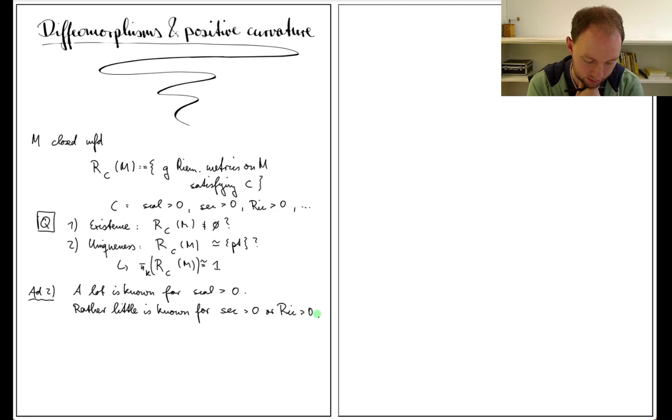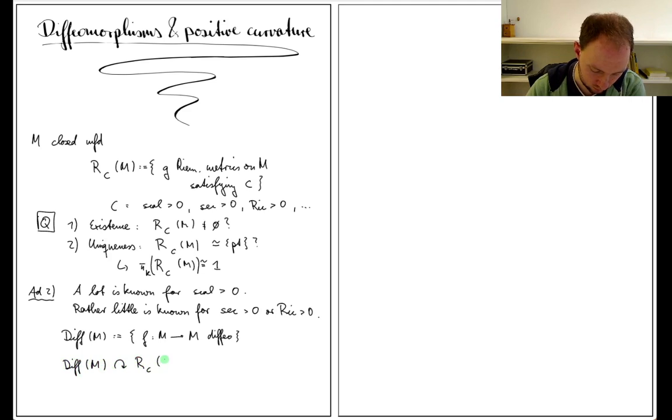What is one way to obtain possibly interesting elements in these homotopy groups? It's given by considering the action of the diffeomorphism group. Let Dif(M) be the topological group of self-diffeomorphisms of M. This acts on Rc(M)